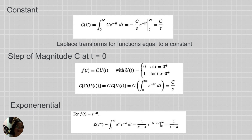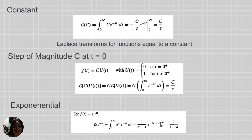For the exponential function f(t) = e^(-at), the Laplace transform of e^(at) equals the integral from zero to infinity of e^(at) times e^(-st) dt, which equals 1 over (s minus a), evaluated from zero to infinity, giving the result 1 over (s minus a).